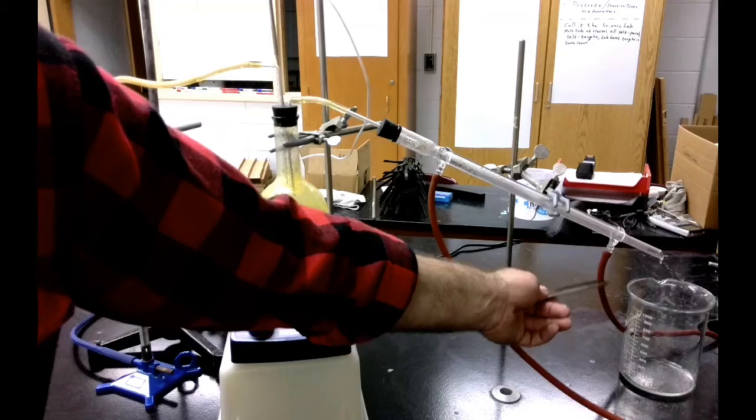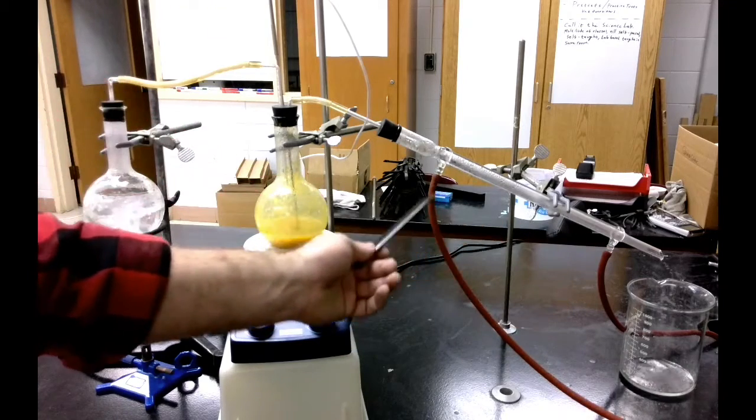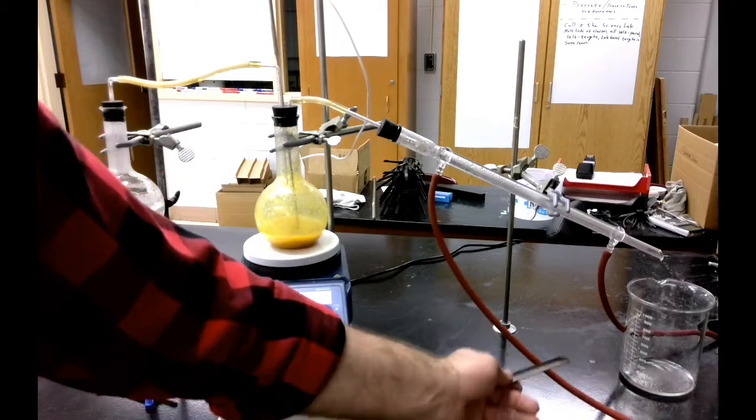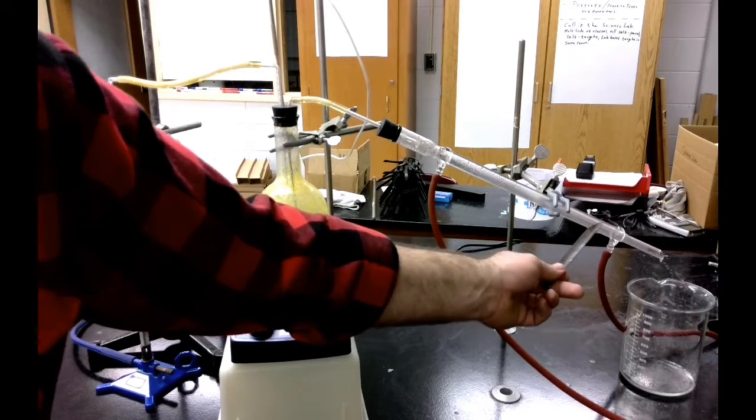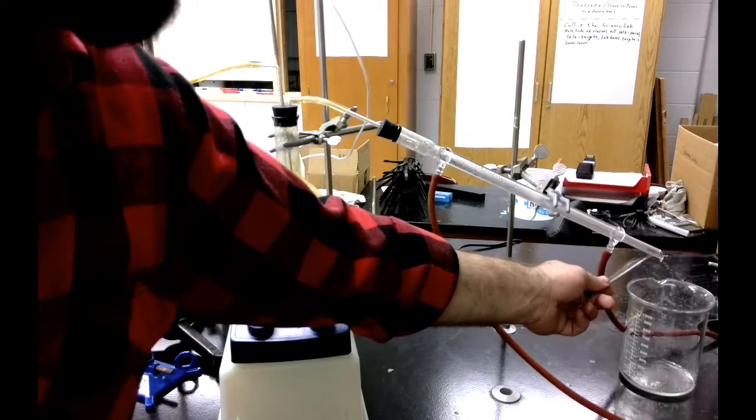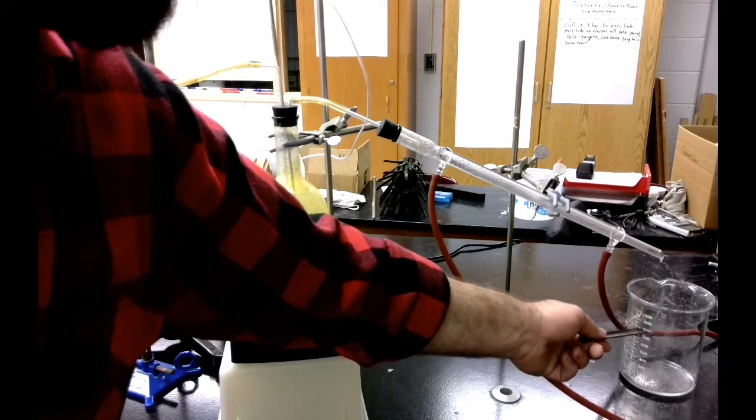So the water comes in through here from a faucet, and then it goes out through here back into the drain. And so by the time the gas is able to travel down the condenser tube, it actually converts back into a liquid and it drips out into my beaker here.